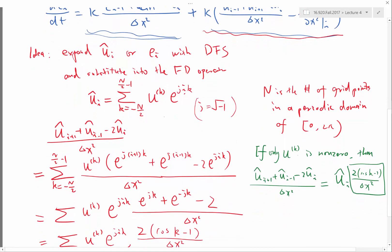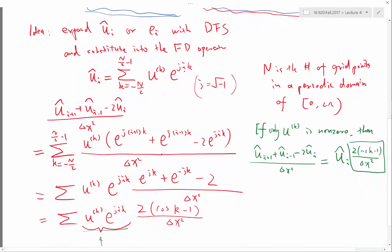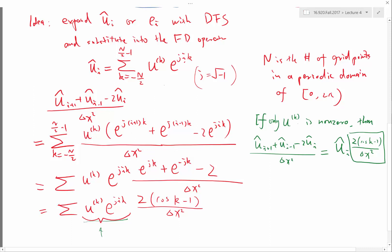So this is one thing we can learn from von Neumann analysis: if we solve the ODE exactly, is the discretization stable or not? Here the answer is yes. The discretization is stable if I can solve the ODE exactly.